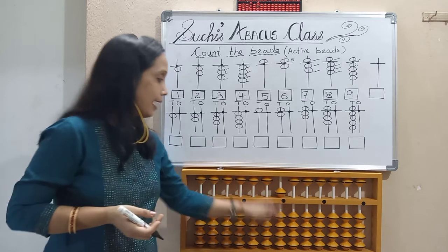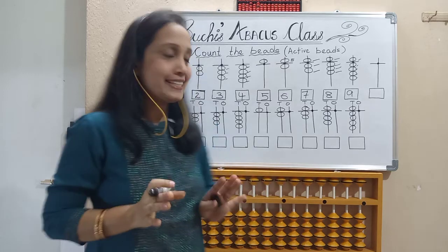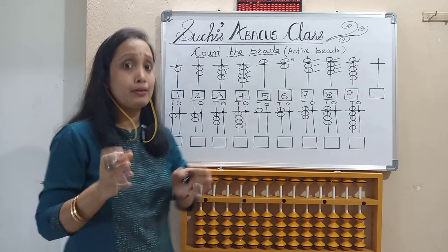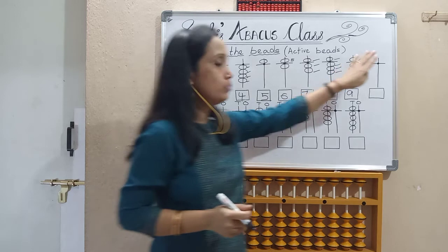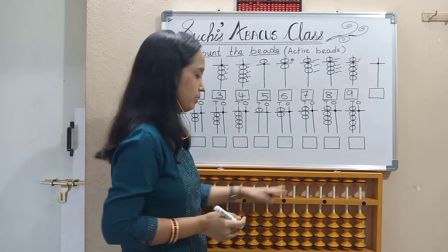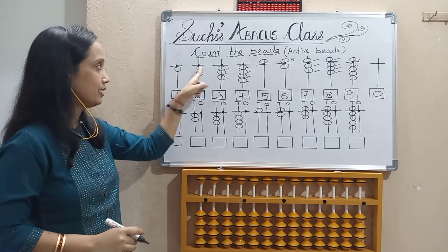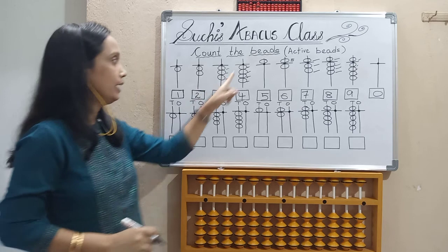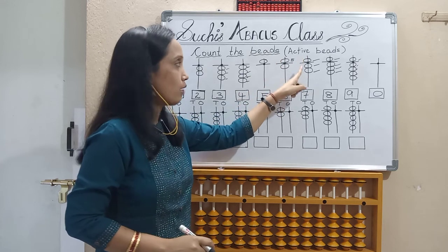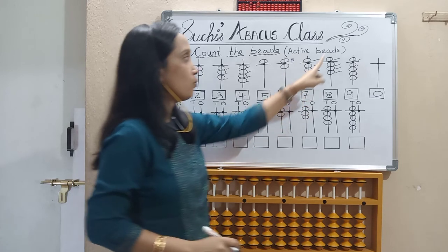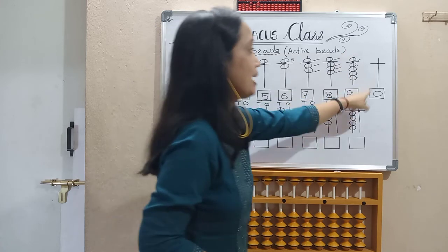The last one: I think you are wondering why I left that rod empty. It is to show that if no bead is touching the horizontal bar, the value is simply 0. So to summarize: 1 lower bead = 1, 2 lower beads = 2, 3 lower beads = 3, 4 lower beads = 4, 1 upper bead = 5, 1 upper + 1 lower = 6, 1 upper + 2 lower = 7, 1 upper + 3 lower = 8, 1 upper + 4 lower = 9, and no beads touching = 0.